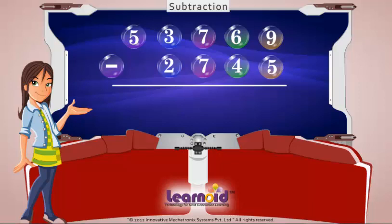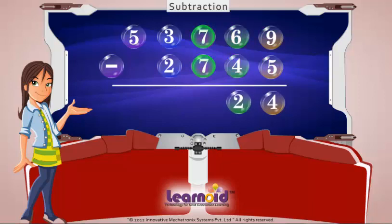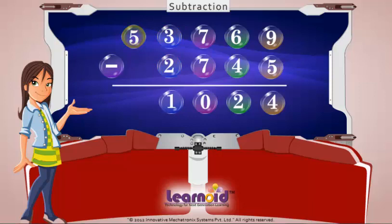And now subtract. 9 minus 5 is 4. 6 minus 4 is 2. 7 minus 7 is 0. 3 minus 2 is 1. 5 minus 0 is 5. The answer is 51,024.